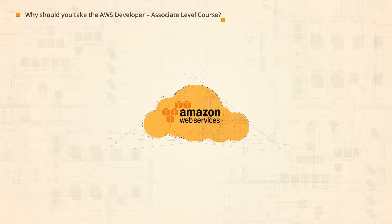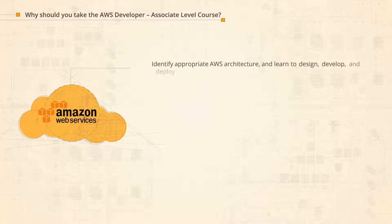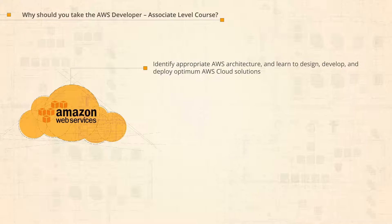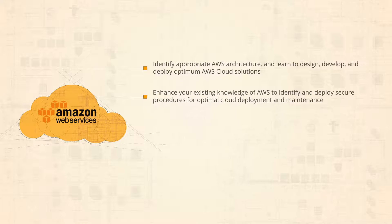AWS Developer Associate is the perfect certification that proves your technical expertise in identifying appropriate AWS architecture and in designing, developing, and deploying optimum AWS cloud solutions. You'll enhance your existing knowledge of AWS so you can identify and deploy secure procedures for optimal cloud deployment and maintenance.